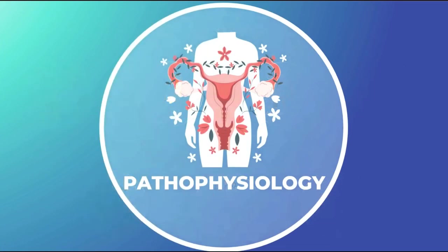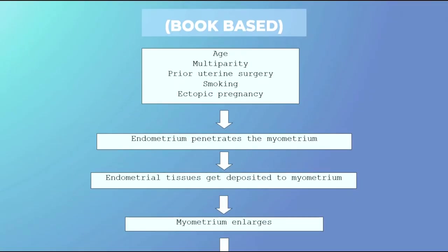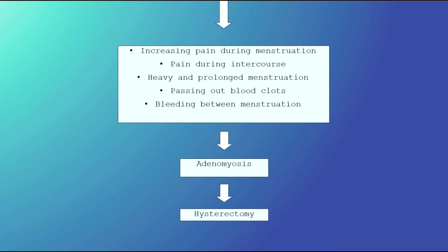Here we have the book-based pathophysiology of hysterectomy. While it remains unclear how adenomyosis develops, according to Hapman and Company 2016, adenomyosis is usually found in women aged between 40s and 50s who had a pregnancy before, had uterine surgery, or have a history of smoking and ectopic pregnancy. It starts with the endometrium invaginating the basalis layer of the myometrial layer, causing endometrial tissues to be deposited into the myometrium. This deposit accumulates, causing the myometrium to enlarge, reflected in the size of the uterus. The abnormality results in pain during menstruation and intercourse, heavy and prolonged menstruation, passing of blood clots, and bleeding between menstruations. The only definitive treatment for symptoms related to adenomyosis is hysterectomy, and future fertility must be considered.